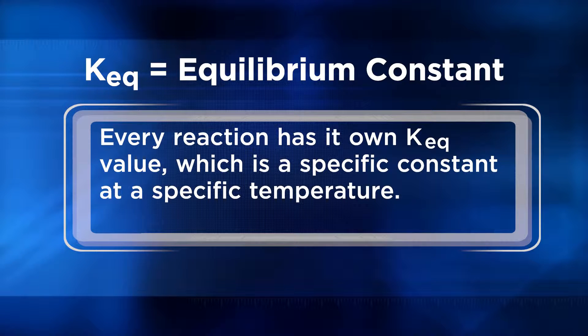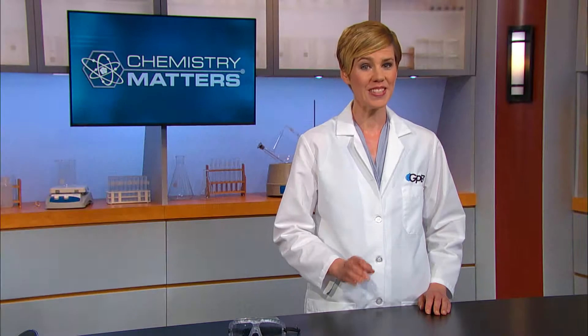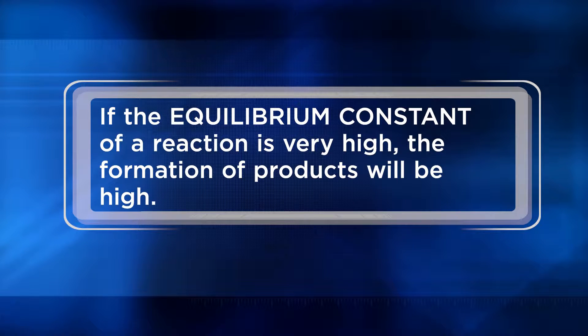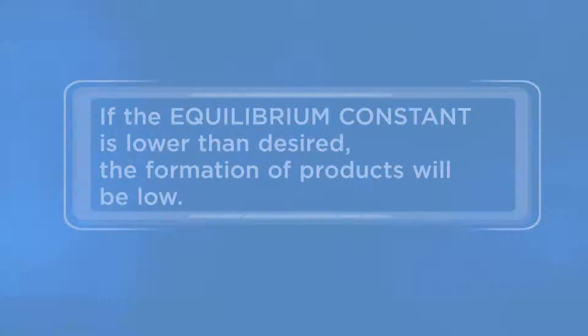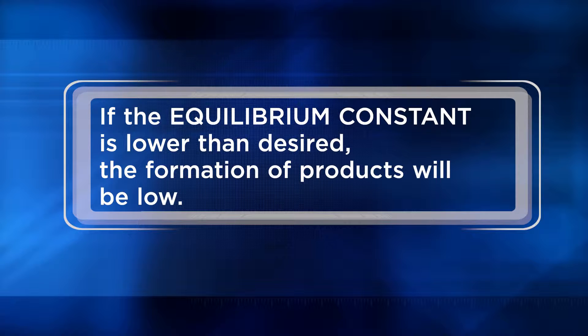Every reaction has its own K_EQ value, which is a specific constant at a specific temperature. Knowing the equilibrium constant for a chemical reaction tells us information about the extent, and therefore efficiency, of the reaction. We can predict how efficient a reaction will be before it happens. For example, if the equilibrium constant of a reaction is very high, formation of products is highly favored. If the equilibrium constant is lower than desired, chemists can suggest ways to improve product formation.